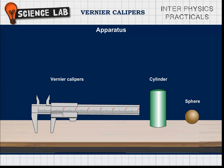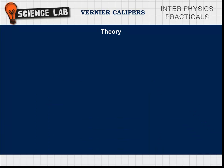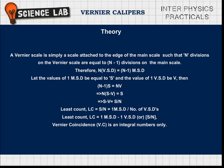Theory: A vernier scale is simply a scale attached to the edge of the main scale such that N divisions on the vernier scale are equal to (N-1) divisions on the main scale.